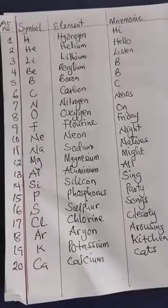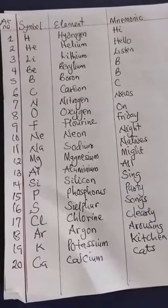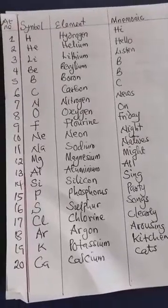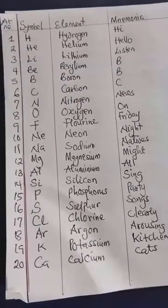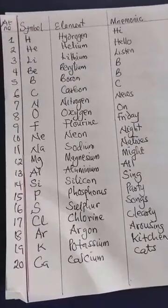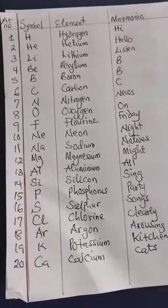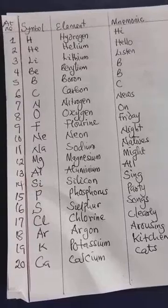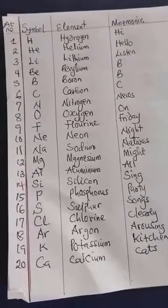So how are we going to remember this? We use a simple mnemonic, like a song we say: Hi, Hello, Listen, BBC News on Friday night. Natives might all sing party songs, clearly, arosine, kitchen cats.